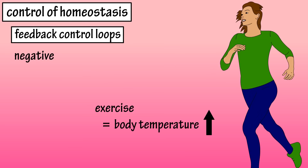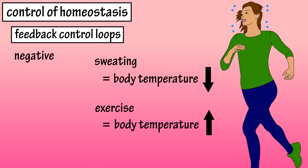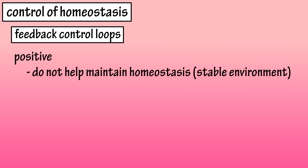The negative feedback loop will do the same if body temperature increases, like during exercise. The negative feedback loop will cause the body to sweat, which will reduce body temperature to within the set point range.